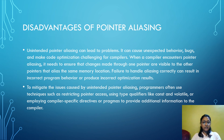When a compiler encounters pointer aliasing, it needs to ensure that changes made through one pointer are visible to the other pointers that alias the same memory location. Failure to handle aliasing correctly can result in incorrect program behavior or incorrect optimization results.